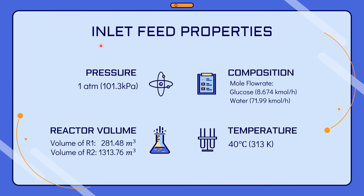After completing the simulation property setup, we proceed to the inlet feed property. Based on research and calculation from the reaction engineering part, the inlet pressure is 180 kPa and the inlet temperature is 40 degrees Celsius. The molar flow rate for the inlet feed consists of 8.674 kmol/hr of glucose and 71.99 kmol/hr of water. The reactor volumes from the reaction engineering hydraulic retention time calculations are: R1 = 281.4 m³ and R2 = 1313.76 m³.